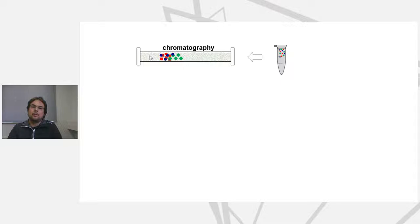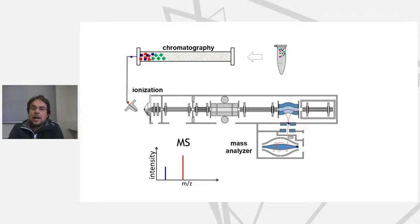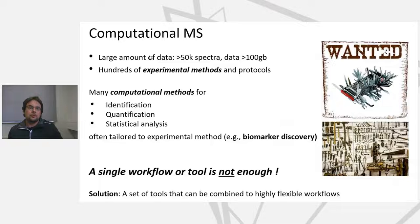Typically these experiments start with a sample that gets separated using chromatography, then the analytes elute from the column and get ionized so they can be measured in the mass spectrometer. The mass spectrometer then measures the individual masses and ions that arrive and produces so-called mass spectra with peaks that relate to the abundance and the mass of the analytes that have been measured.